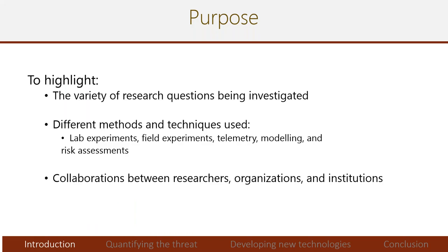Thank you for having us. Today we're giving a brief overview of Canadian research on Asian carp, highlighting three main things: the variety of research questions being investigated, the different methods and techniques used across Canada — including lab experiments, field experiments, telemetry modeling, and risk assessment — and the collaborations occurring between researchers across federal, provincial, local governments, and conservation agencies.